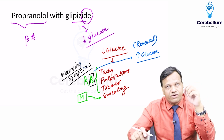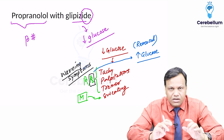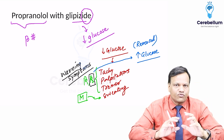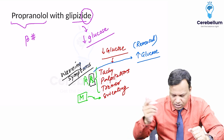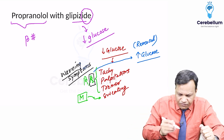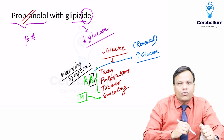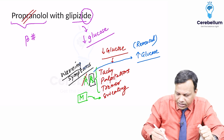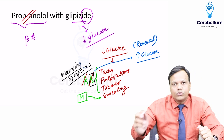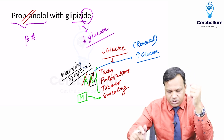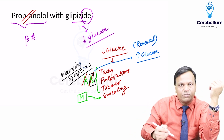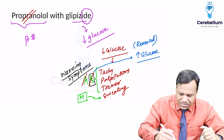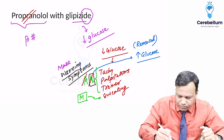Beta receptors are very important in diabetic patients — first they cause warning symptoms, and second they cause reversal of hypoglycemia. If we give a beta blocker like propranolol, which blocks both beta-1 and beta-2, it will cause two problems. The first problem is that the warning symptoms will not be there — it will cause masking of warning symptoms.